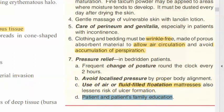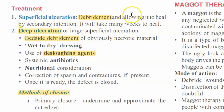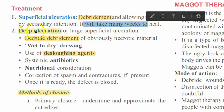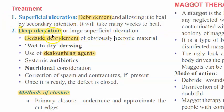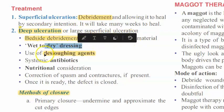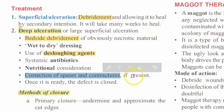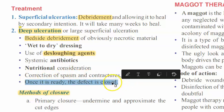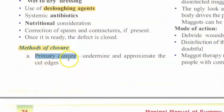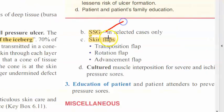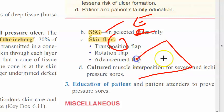For treatment: if superficial, do debridement and allow healing by secondary intention (may take weeks). For deep or large superficial ulceration, besides debridement, use de-sloughing agents, antibiotics, nutritional support (vitamin C, correction of anemia with iron), and correction of spasms and contractures. The defect can then be closed by primary closure, split skin graft (epidermis and part of dermis), or flaps.